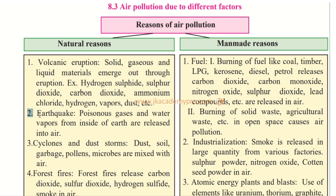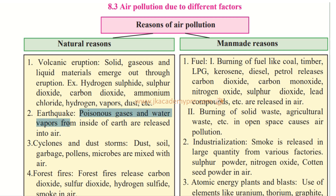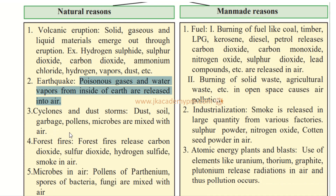The second natural cause is earthquake. When an earthquake occurs, poisonous gases and water vapor from inside the earth are released into the air. The earth splits open and all these gases come out, causing air pollution.